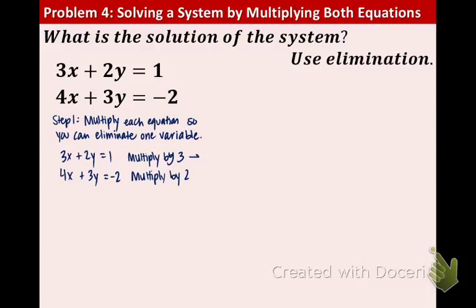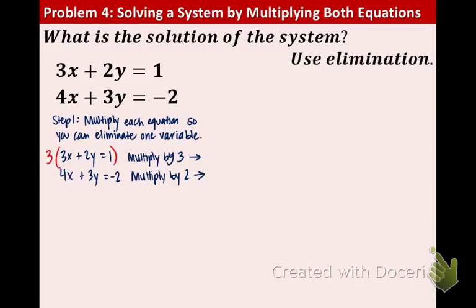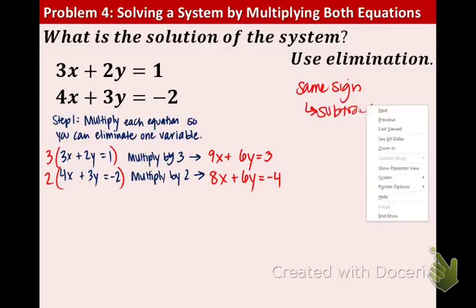We're going to multiply by 3 and multiply by 2. So that's going to give us 9x plus 6y equals 3. Remember, we're multiplying every little number by 3 on top. And the second equation, we're going to have 8x plus 6y equals negative 4. We multiplied everything by 2. The good news is the numbers in front of the y are both 6. They are the same sign. So we are going to subtract to get rid of the numbers. Otherwise, we would get 12 if we added.